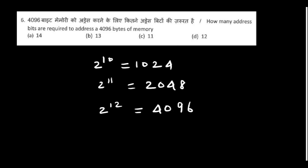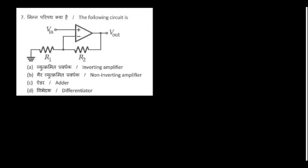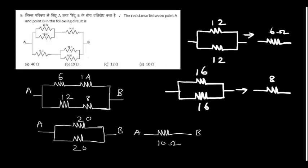The following circuit is a non-inverting amplifier because the input is given at the non-inverting terminal of the op-amp. The resistance between point A and point B in the following circuit is...